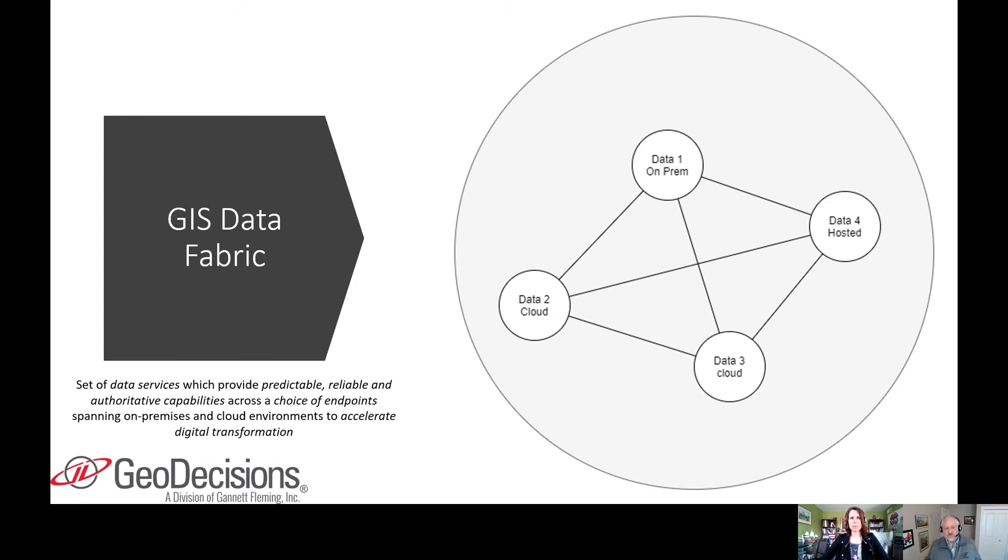The driving factor for a GIS data fabric is to provide a single point of truth for people, so they know when they come to your endpoint that the data they're getting is predictable, reliable, and authoritative across many different endpoints that you have.